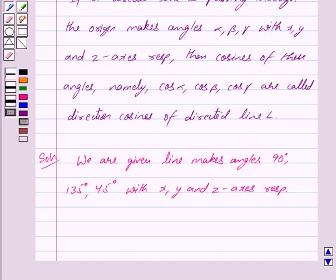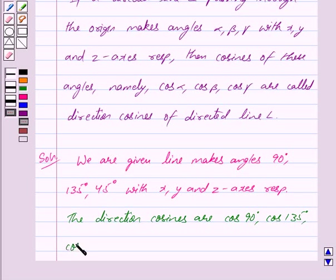Then by the key idea we have the direction cosines are cos 90 degree, cos 135 degree and cos 45 degree.